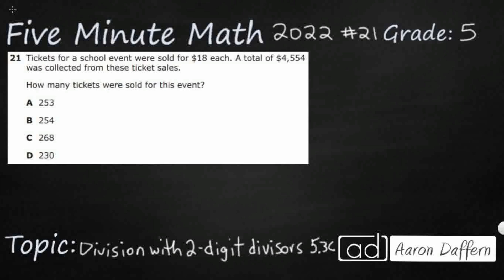So we've got tickets for a school event that were sold for $18 each. This 'each' kind of lets me know it's either going to be multiply or divide because we're dealing with equal groups. We have a total of $4,554 collected from the ticket sales. How many tickets were sold? Let's look at it this way. I'm going to draw a strip diagram here. So here's my total.